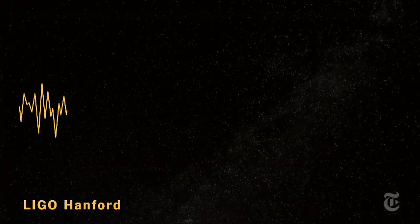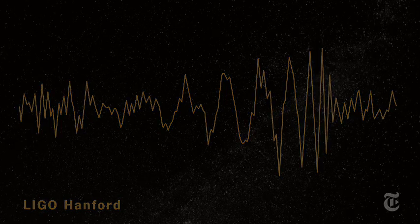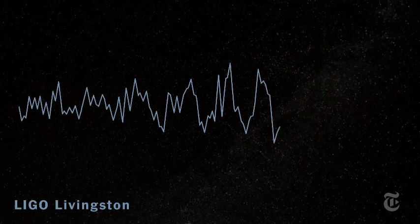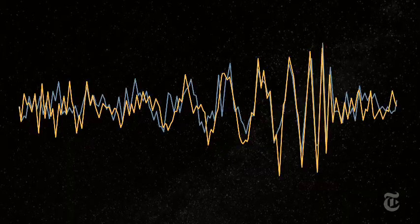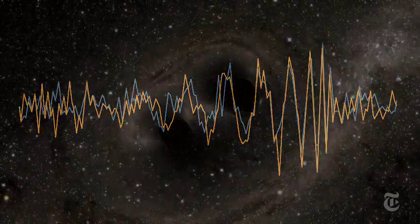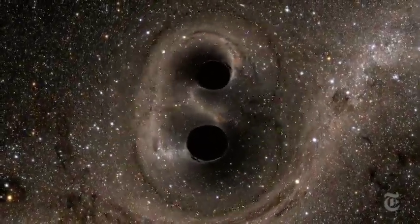On the 14th of September, 2015, LIGO detected a flickering light and turned it into a sound wave. A chirp. It was the echo of the marriage of those two black holes.